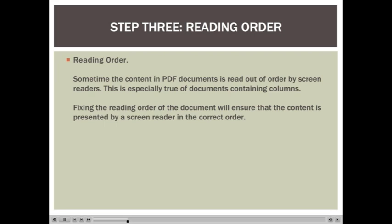Step 3 in creating an accessible PDF document is to ensure that the reading order of the material within the document is correct. This is more of a problem with older versions of Adobe Acrobat than newer versions. If you're using Adobe Acrobat 8, 9, or 10, you shouldn't have any difficulty with reading order. The one exception is if you've used tables to simulate columns of text instead of using the columns tool inside of Microsoft Word — that's when you're going to have difficulty.